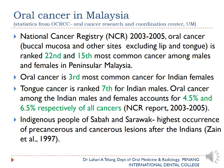In Malaysia, the national cancer registry in 2005 ranked oral cancer — including buccal mucosa, lip, and tongue — as 22nd and 15th most common in males and females respectively in Peninsular Malaysia. For Indian females alone, it is ranked the third most common cancer. Tongue cancer is ranked seventh for Indian males. Oral cancer accounts for 4.5 to 6.5 percent of all cancers in Malaysian Indians.